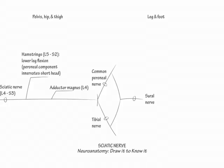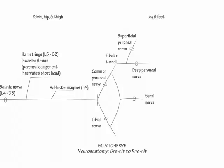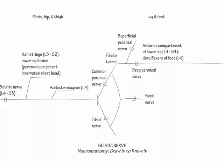Next, show the peroneal nerve entering the lower leg. As it wraps around the fibular head, it again divides. Show it branch into the deep peroneal and superficial peroneal nerves. Show the deep peroneal nerve passing through the lower leg and indicate it innervates the anterior compartment lower leg muscles.